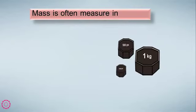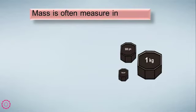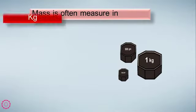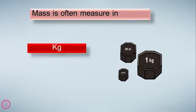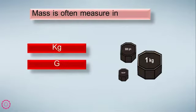Mass is often measured in kilogram and gram. Gram is smaller than kilogram; kilogram is more than gram. These are the units of measuring mass or weight. When you go to the market, if you want to buy a kilo of apples, for example, they tell you this is one kilo.